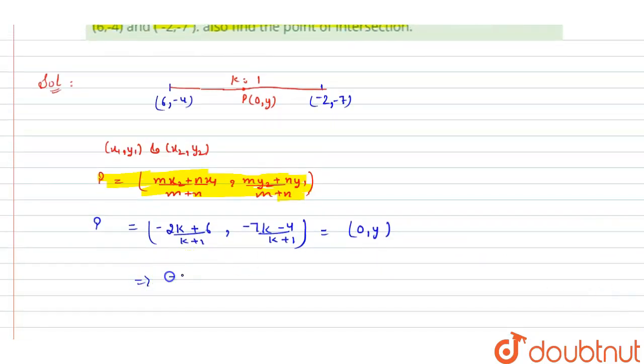(-2k + 6) divided by (k + 1) equals 0, which implies -2k + 6 equals 0.